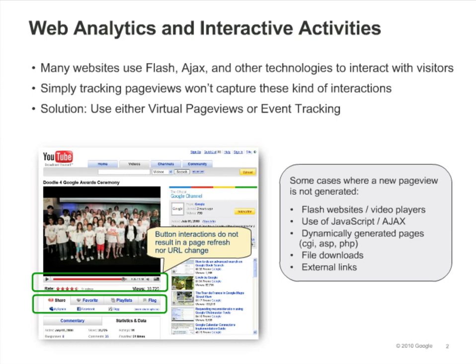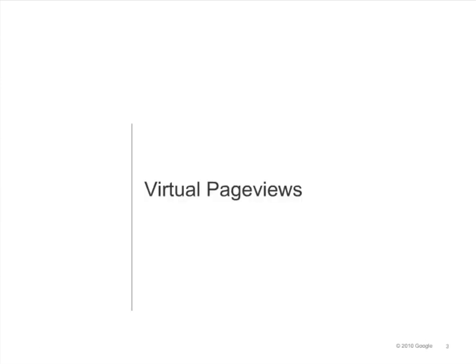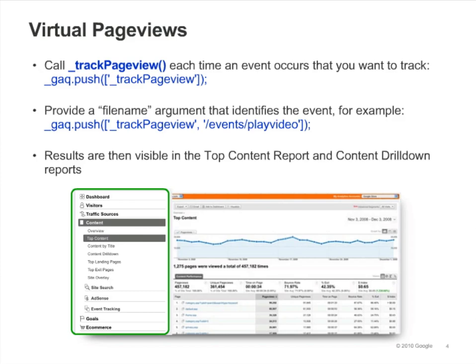There are two ways: virtual page views and event tracking. You can create a virtual page view to represent practically any kind of activity or interaction you want. You simply call trackPageview and provide any name you want as the argument. It's virtual because you're telling Google Analytics to register a page view even though no new page has actually been loaded.